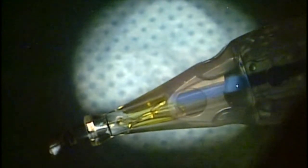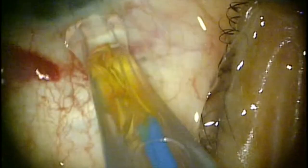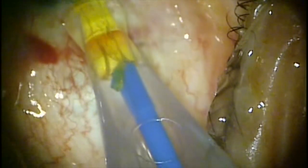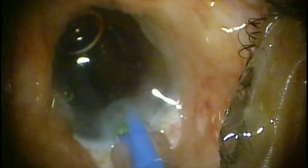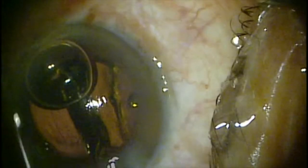The second instrument acts as a barricade to prevent the haptic from going forward and pushes it back into the proper position. Here we can see that same lens is now in the proper configuration as it goes inside of the eye.